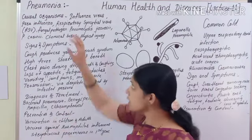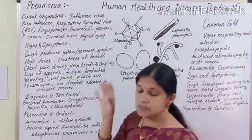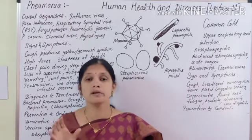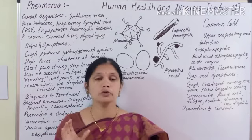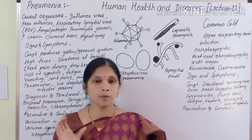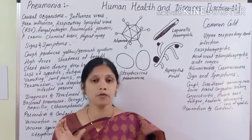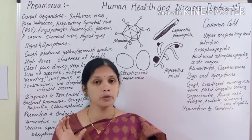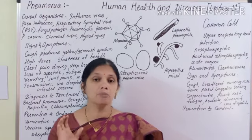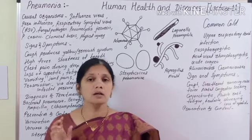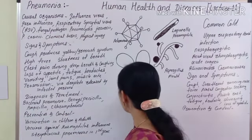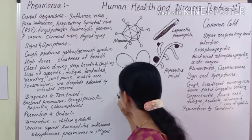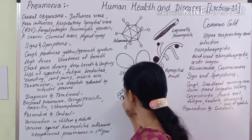Pneumonia is a disease related to our respiratory system. It involves inflammation of the lungs, and specifically inflammation of the alveoli — the sac-like structures present in the lungs. These alveoli are air sacs present in the lungs.